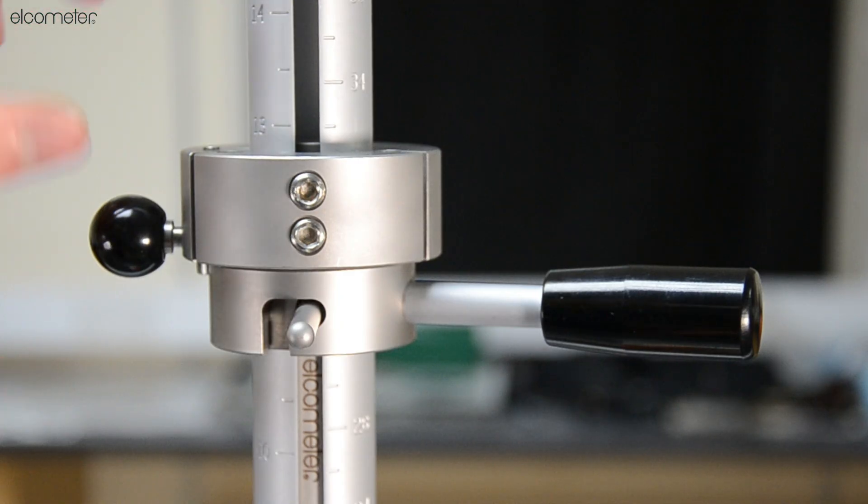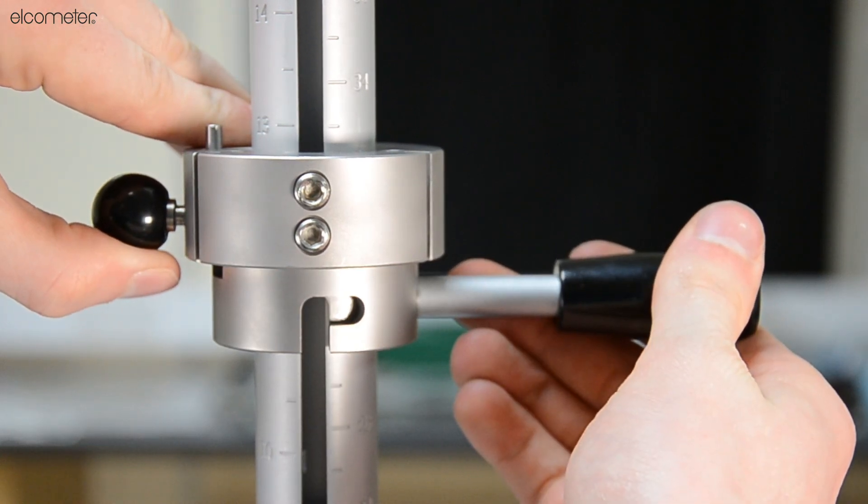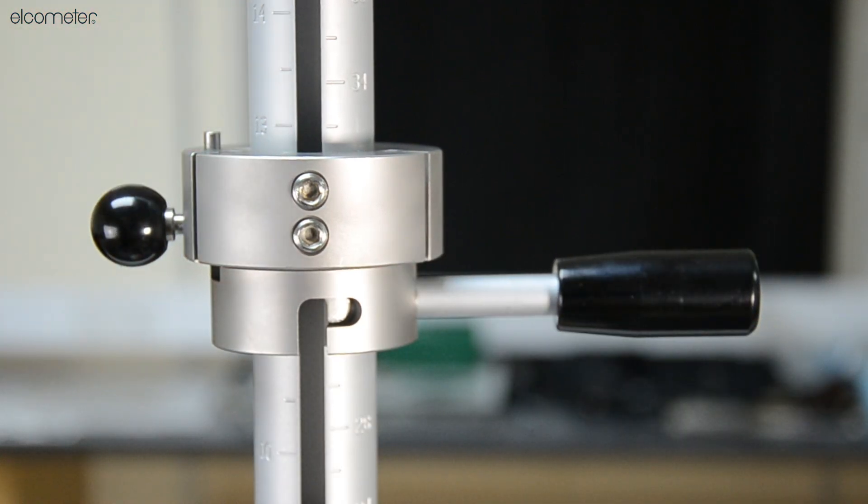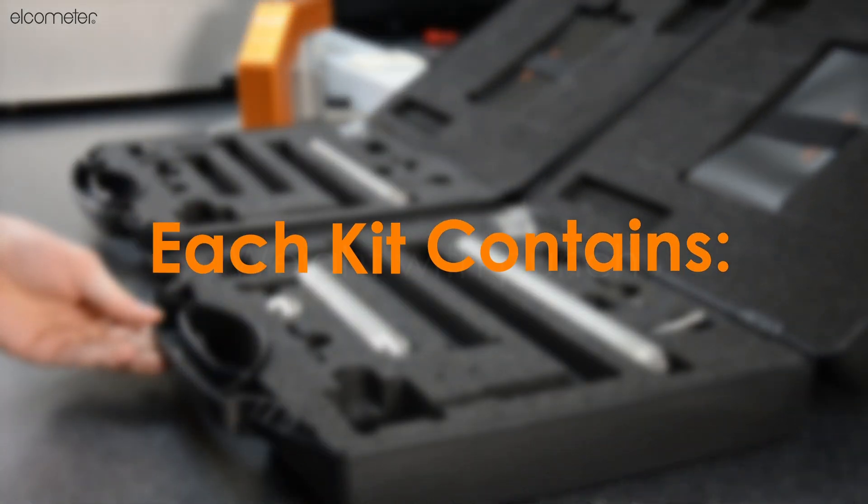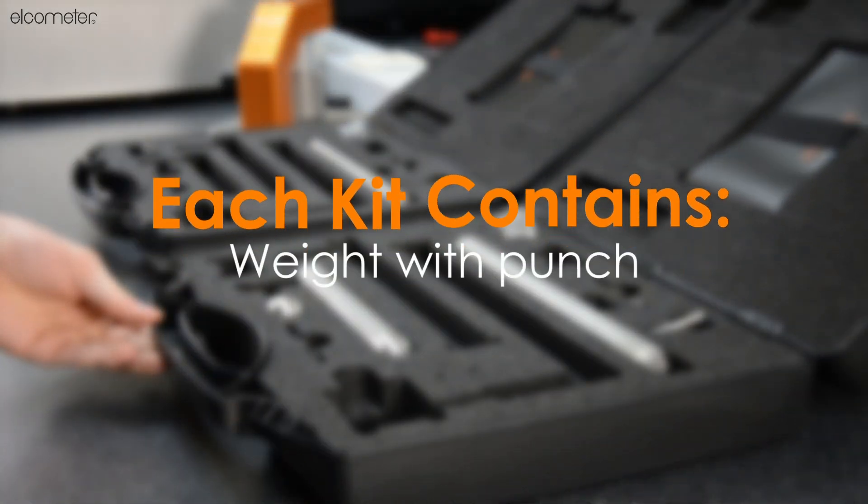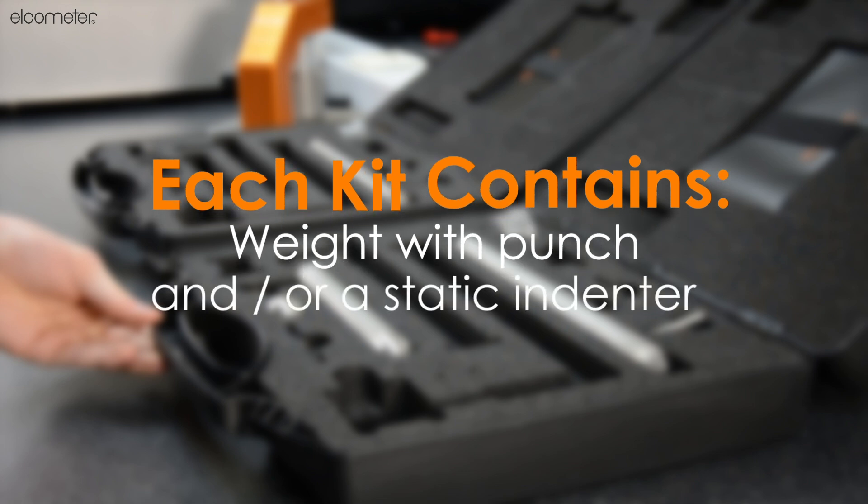The height from which your weight is released is defined by the particular standard you are working towards. Each kit contains a weight with an attached punch and/or a static indenter. The punch and indenter define the degree of deformation at the point of impact.